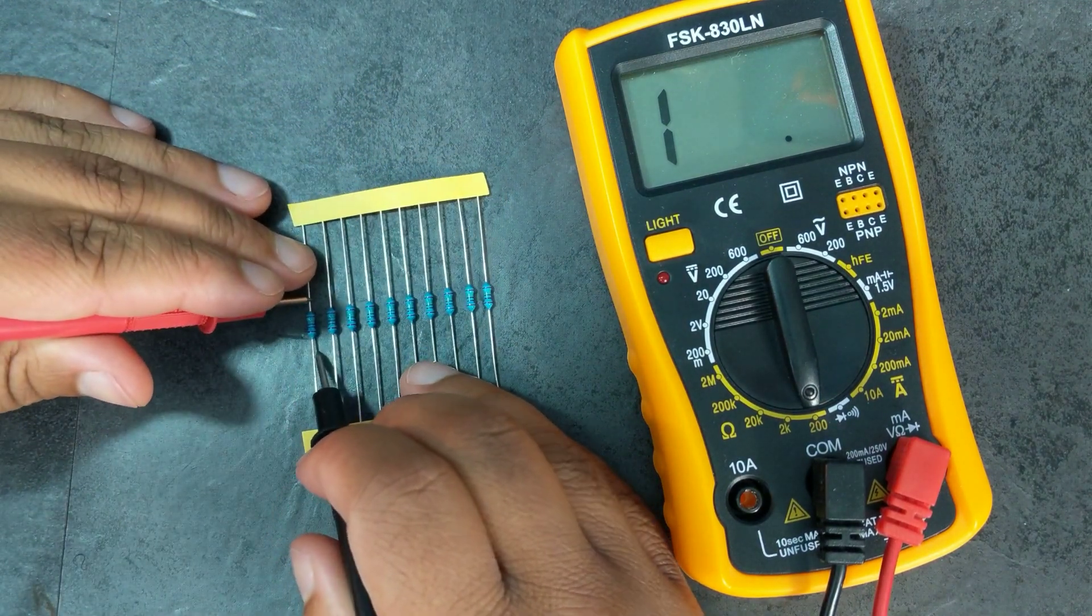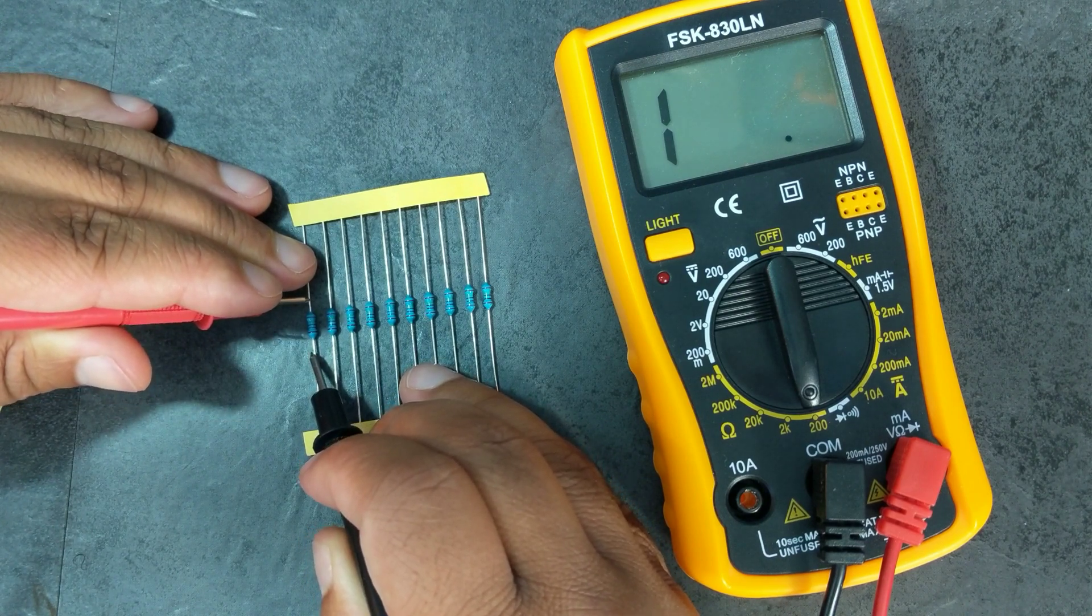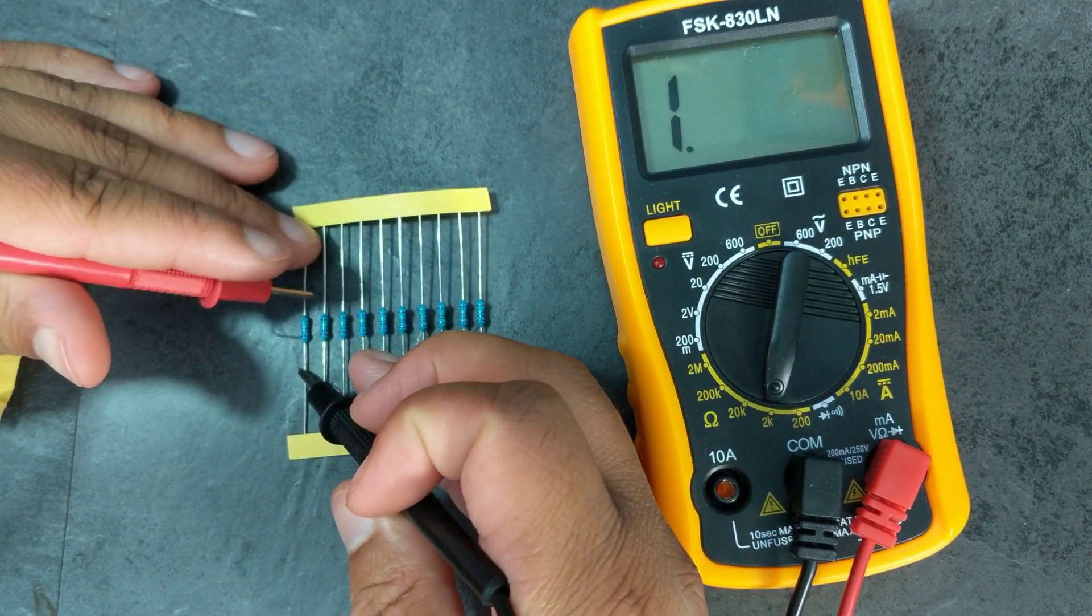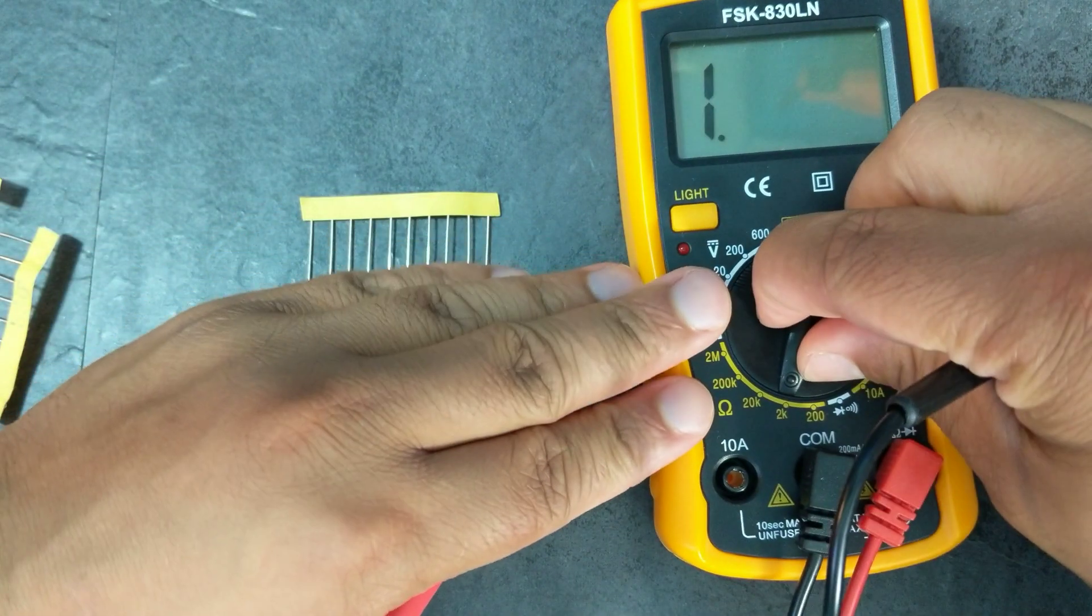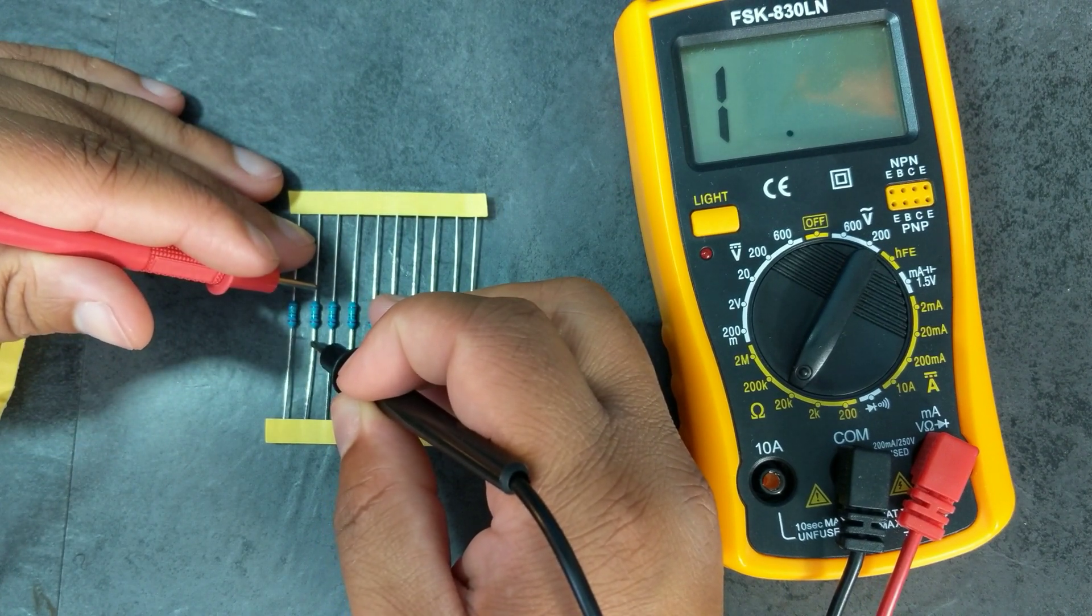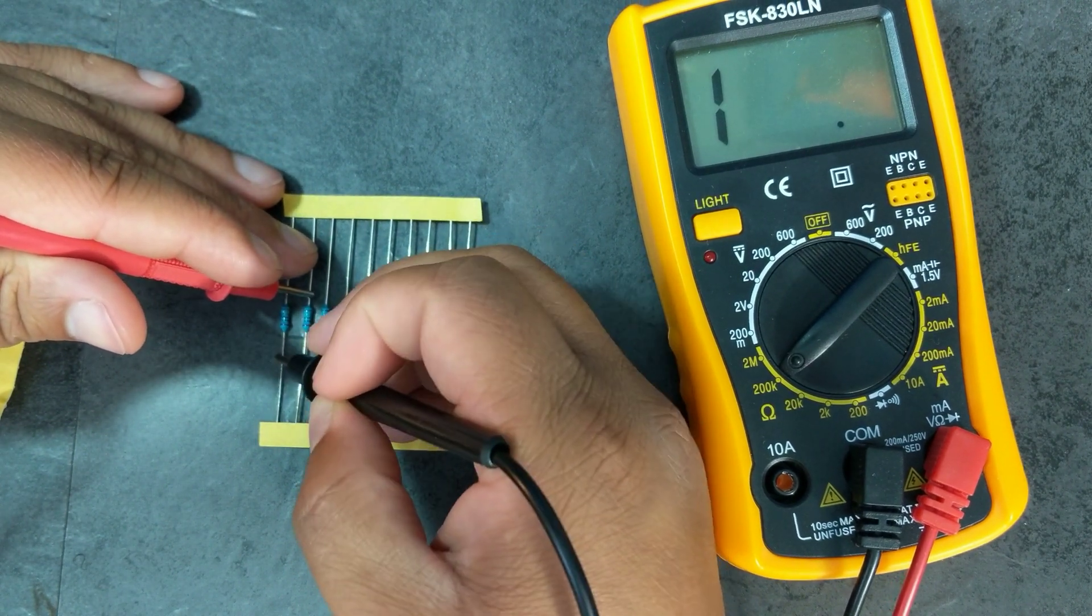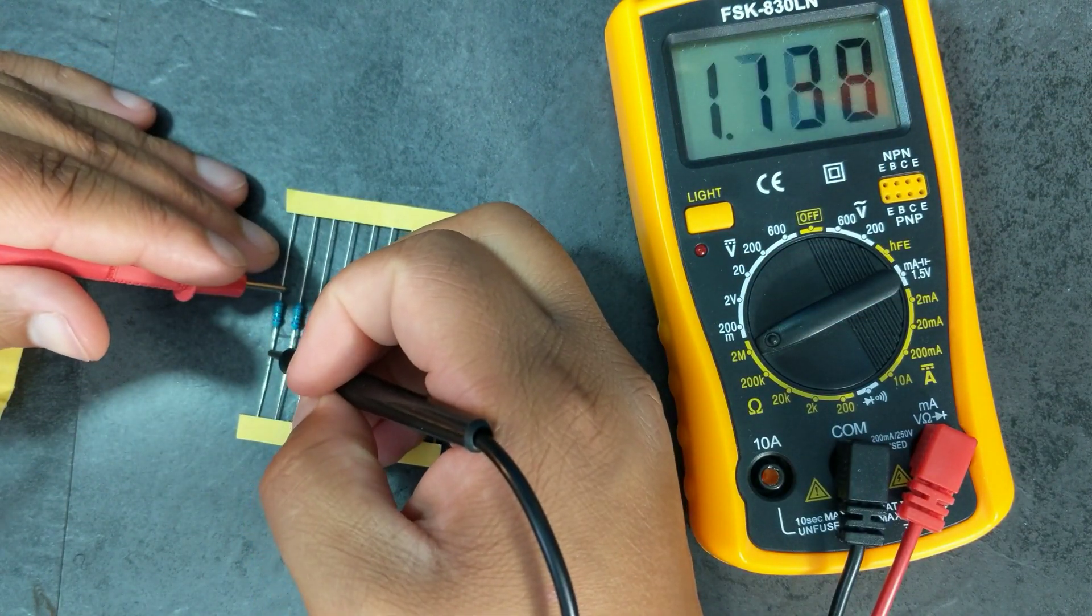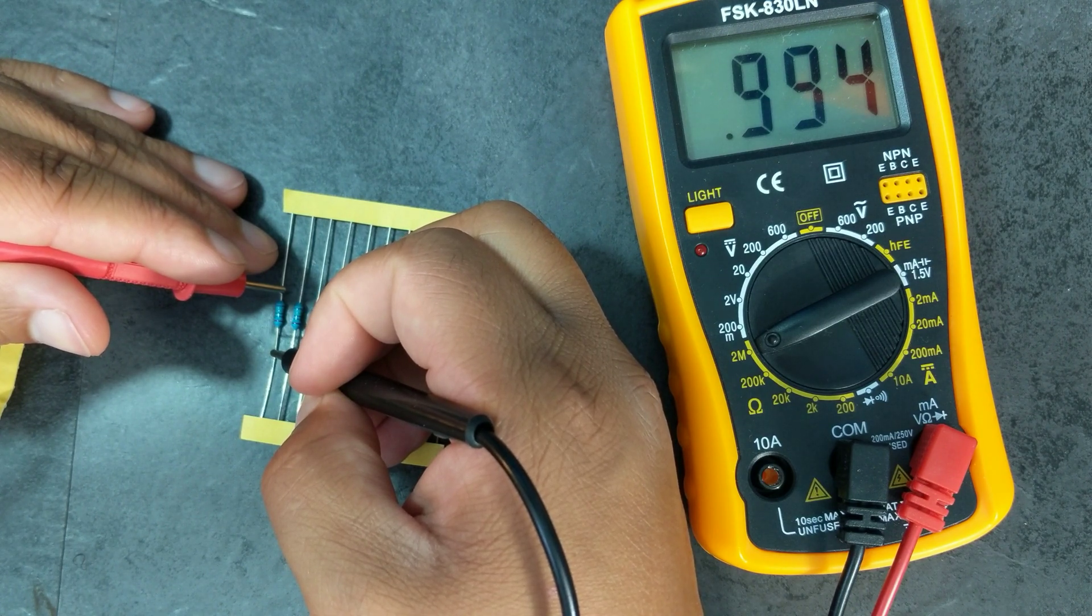So now my multimeter just doesn't show anything obviously. So when you get that, you crank it up to 2k, try again - nothing. Maybe test, nothing. Go to 20k, nothing again. 200k - okay, this is obviously a big ohm resistor, 2 million.